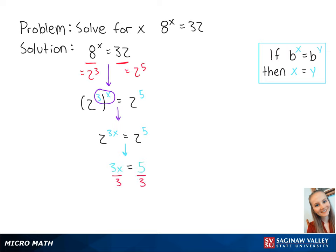If we divide both sides by 3, we get x equals 5 thirds. This is the final answer.